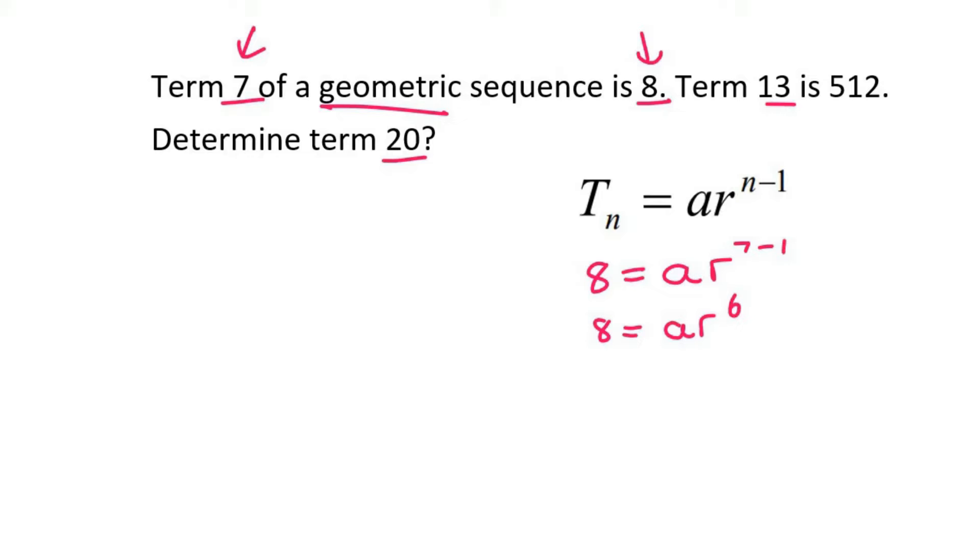Then we go to the next piece of information which tells us that term 13 is 512. So we say 512 equals ar^13-1. I'm just going to simplify that to become 12. So 512 = ar^12. There we have two equations with two unknowns.